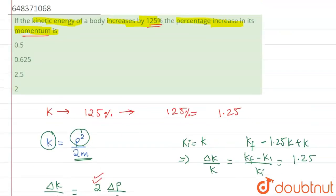So our answer will be clearly option number b, that is 0.625, understood?